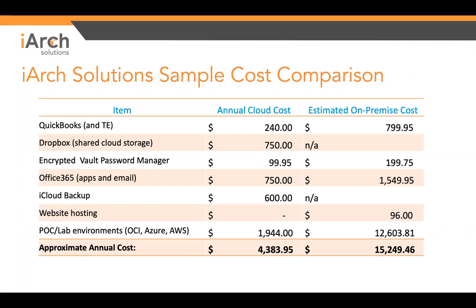The one big item I want to point out is the POC lab environments. We have sandbox environments on each of OCI, Azure, and AWS, paying roughly about $2,000 a year for those three providers combined. If I had to buy the equivalent hardware and store it somewhere — factoring in internet connection, data center overhead — I'm looking at almost $13,000 for the first year. Year two that hardware is a year old; year four it's obsolete and I have to buy again. That's where the infrastructure as a service cost-effectiveness really comes in.